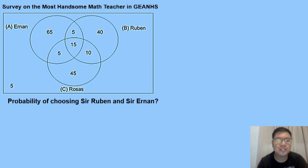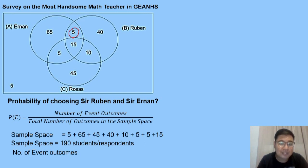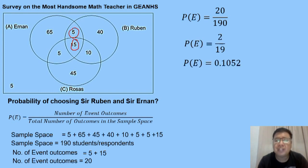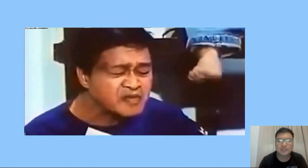Next: probability of choosing Sir Ruben and Sir Ernan. Same formula, sample space is 190. The event outcomes are the intersection of Sir Ruben and Sir Ernan: 5 plus 15 equals 20. Substituting: 20 over 190, lowest term is 2 over 19. Dividing gives 0.1052, multiplied by 100% gives 10.52%.